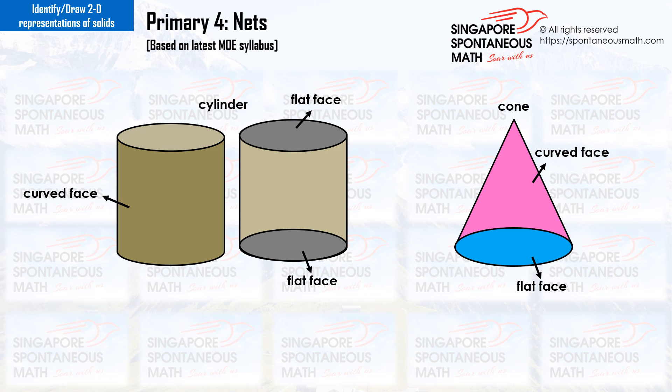A cylinder has 2 flat faces and a curved face. A cone has a flat face and a curved face.